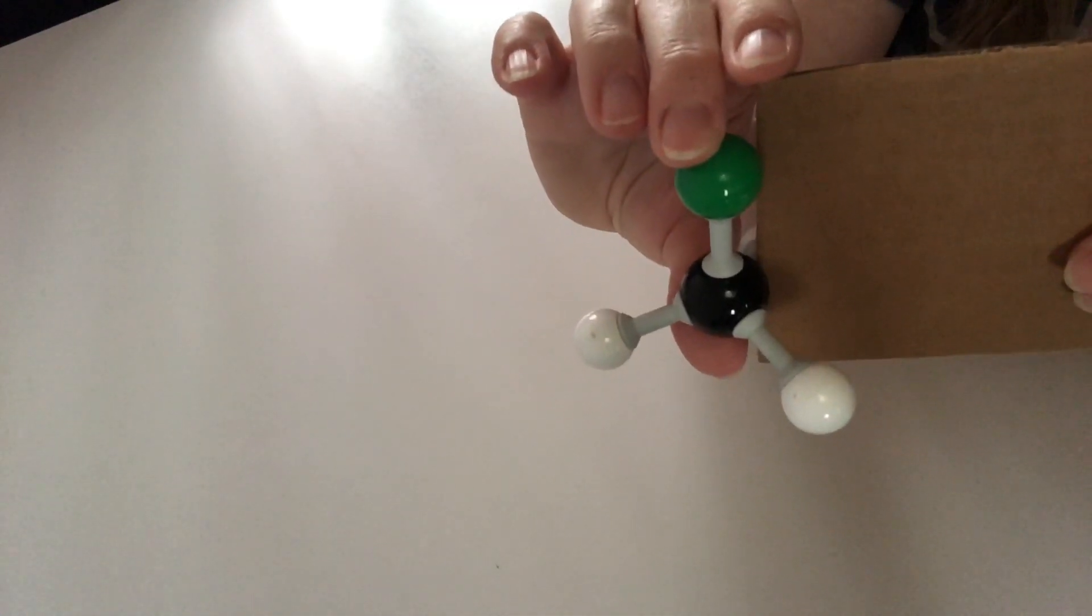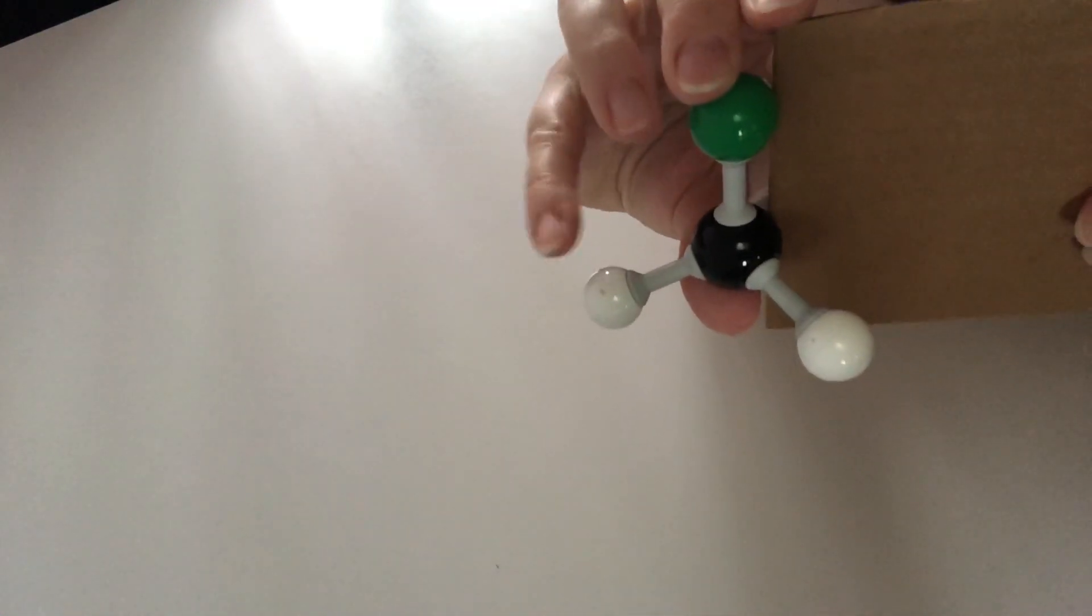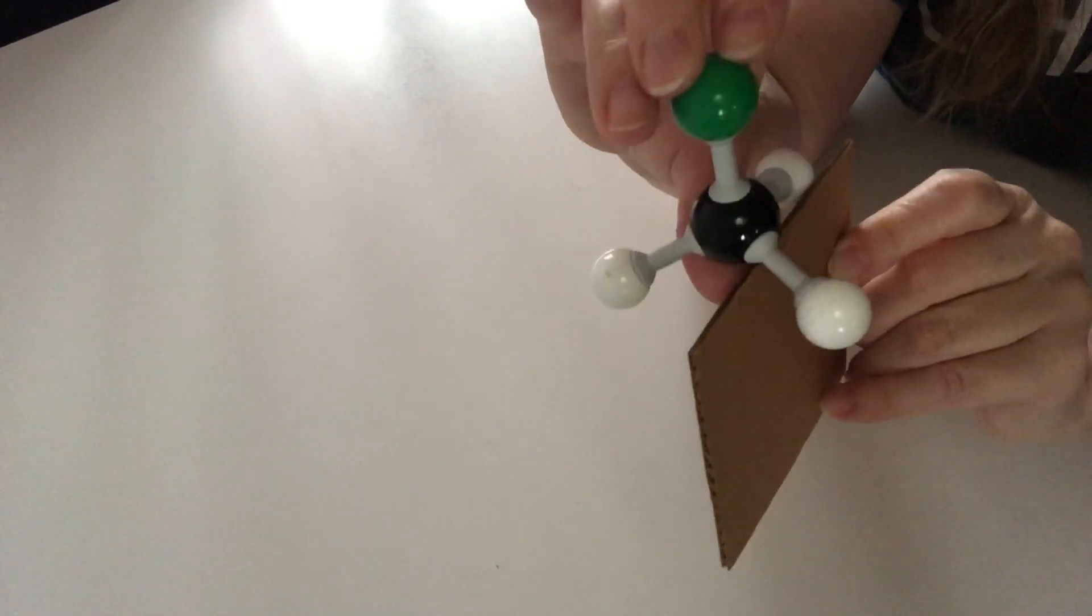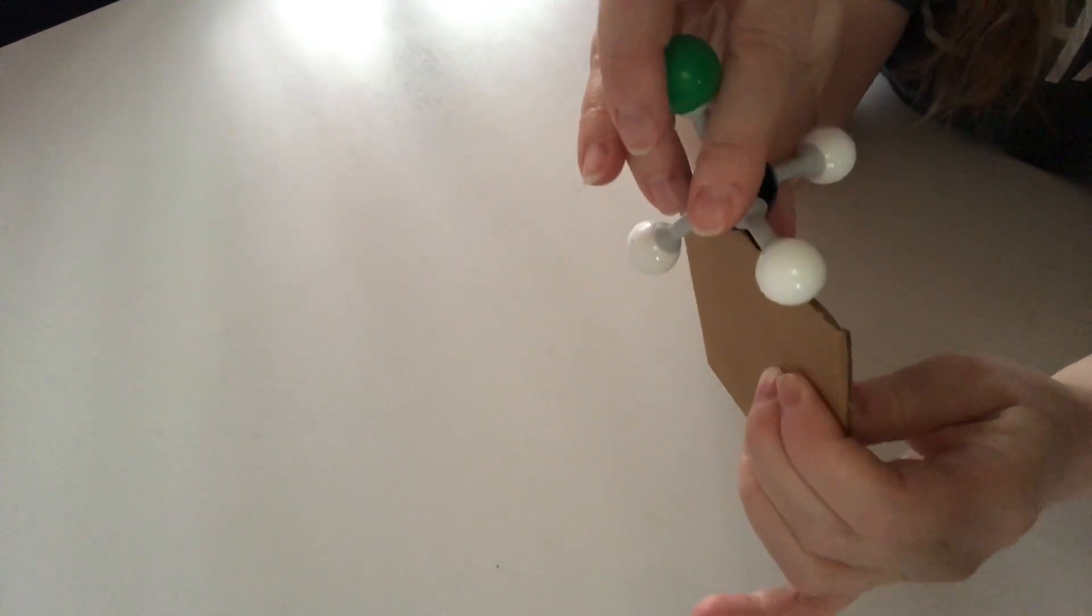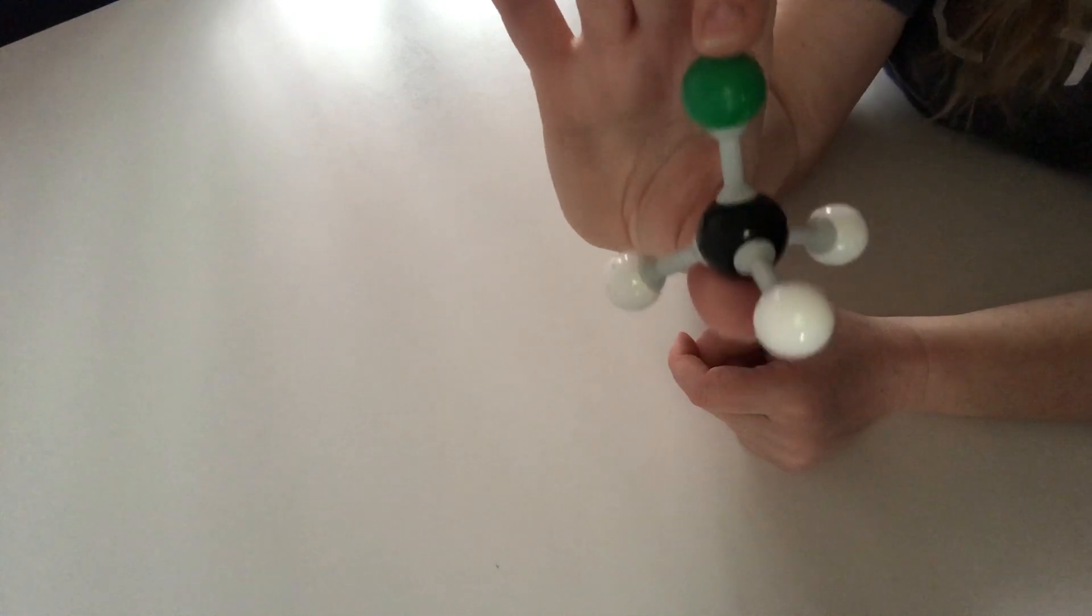Well, look, there is a vertical reflection plane. If I reflect through this plane, it'll be identical. If I reflect through this plane, it'll be identical. And if I reflect through this plane, it'll be identical. So just like the example before, it's got three vertical reflection planes.